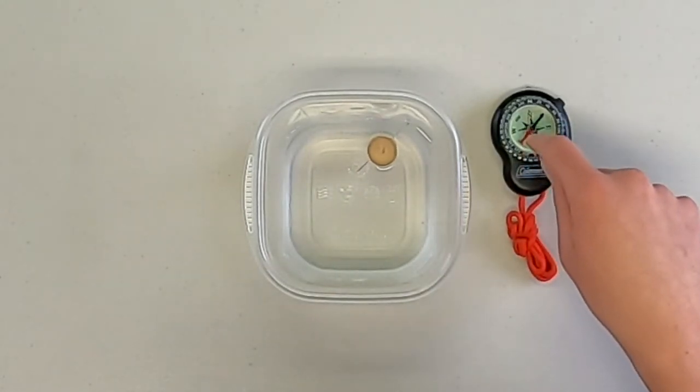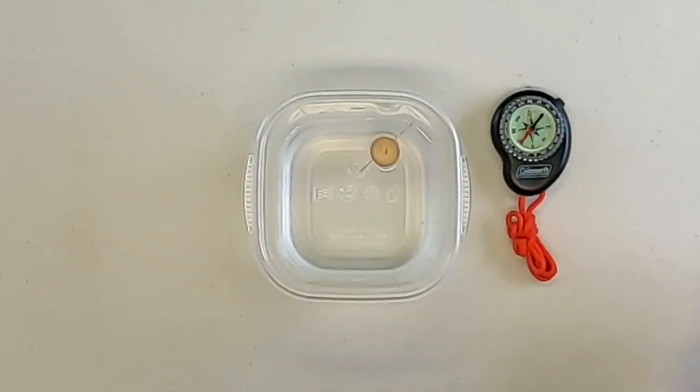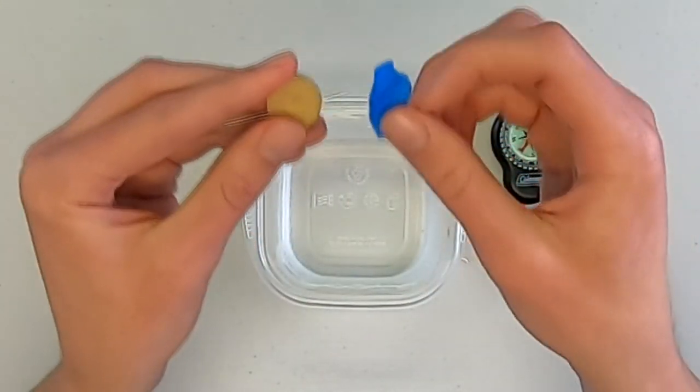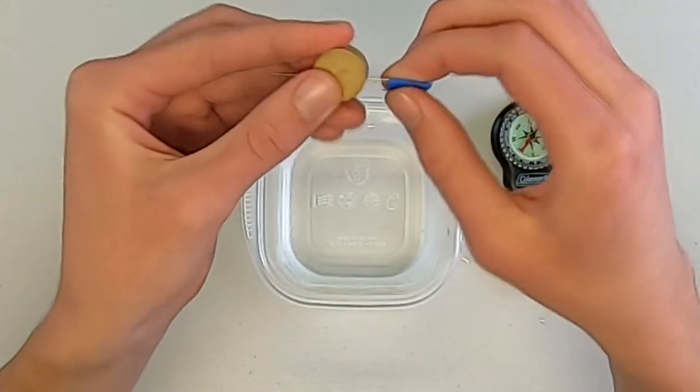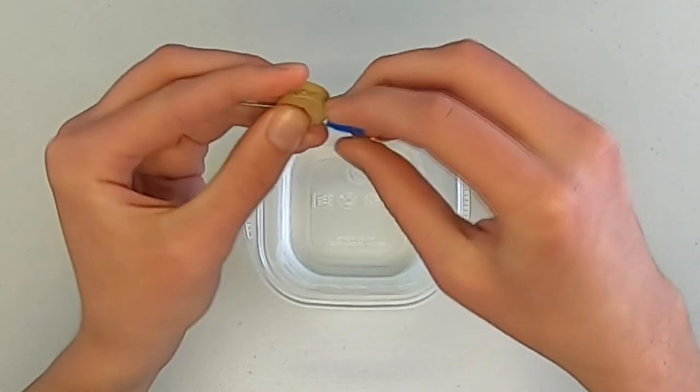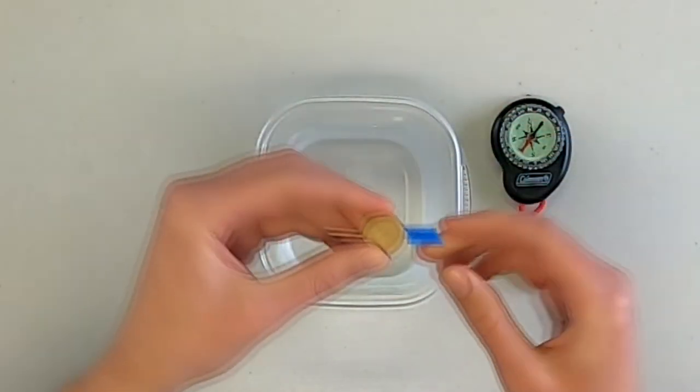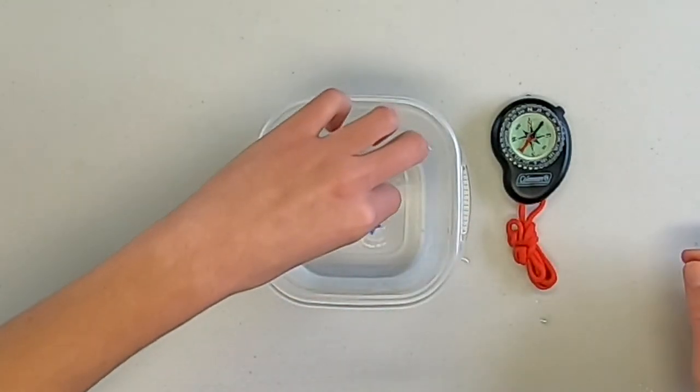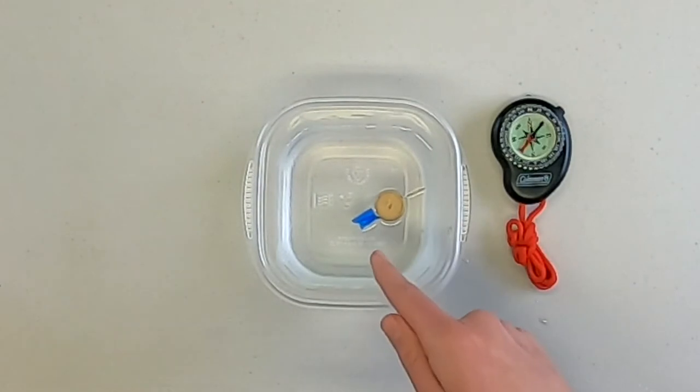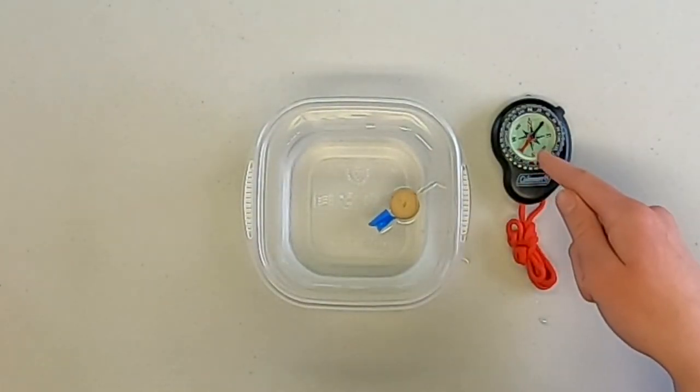And you can see this red line is pointing towards the north and it's the same way that our compass is pointing. I'm going to put a piece of tape on the north end just so that you can tell which side is north. So you can see that no matter how I place it in the water, the north side will always match up with this compass.